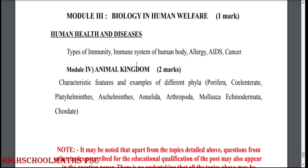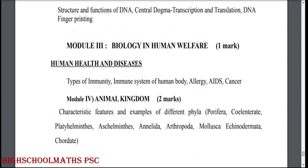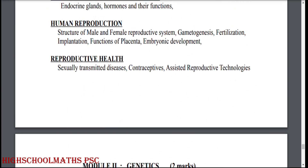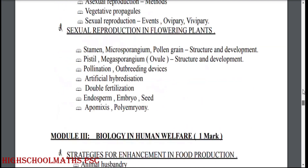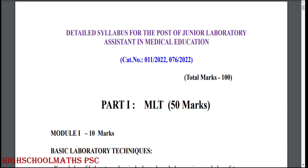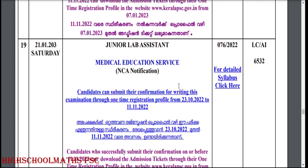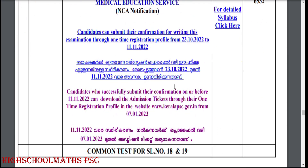Module 4: Animal kingdom, 2 marks. Characteristic features and examples of different phyla. This is the type of detailed syllabus. Best wishes for the examination — February 7th.